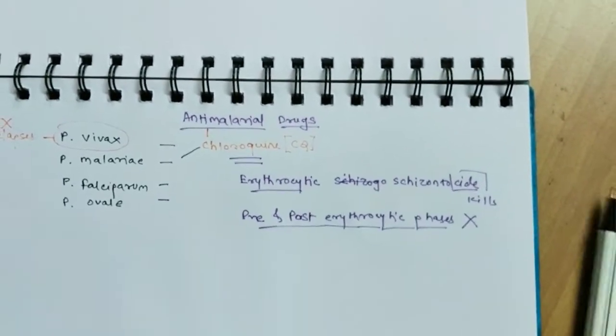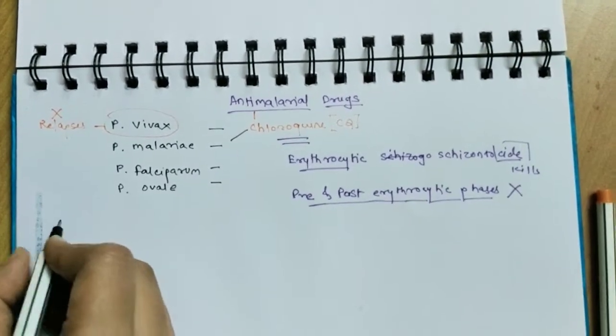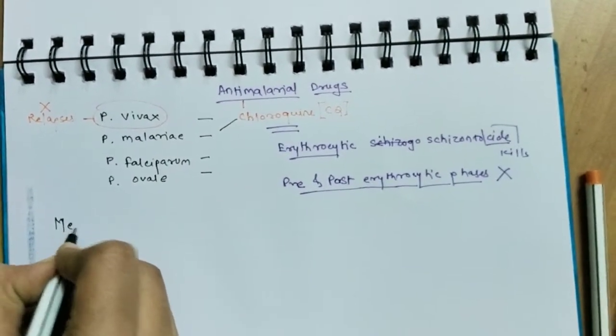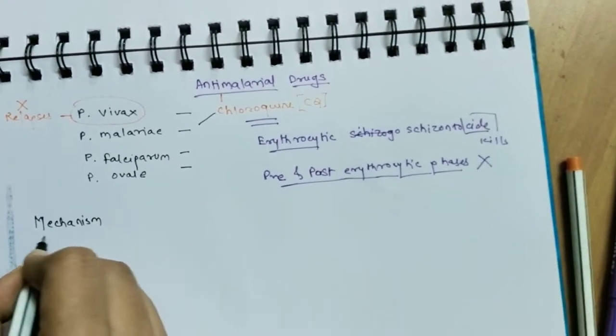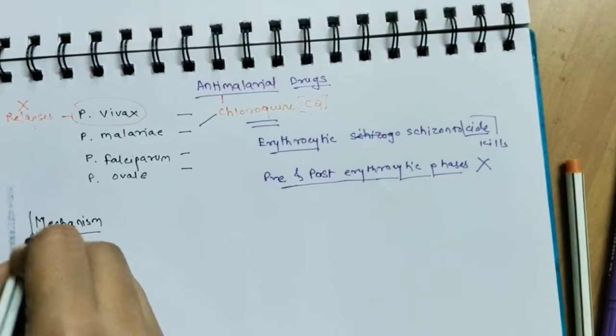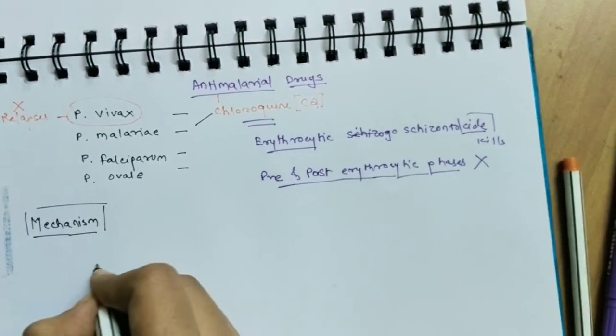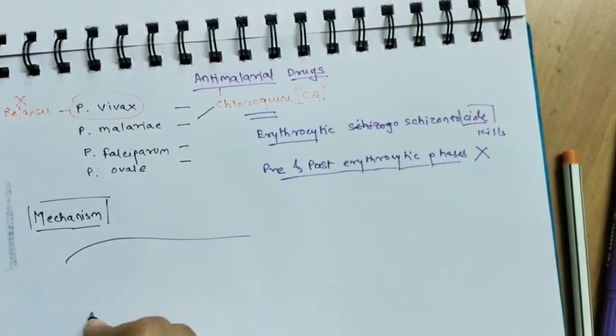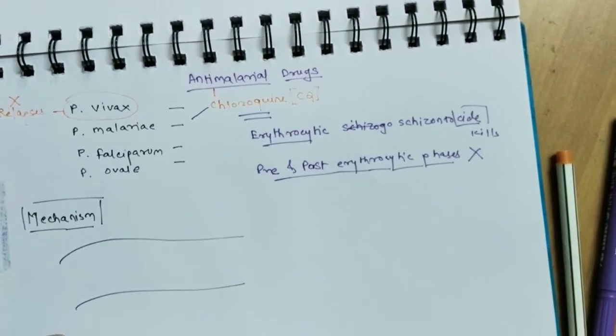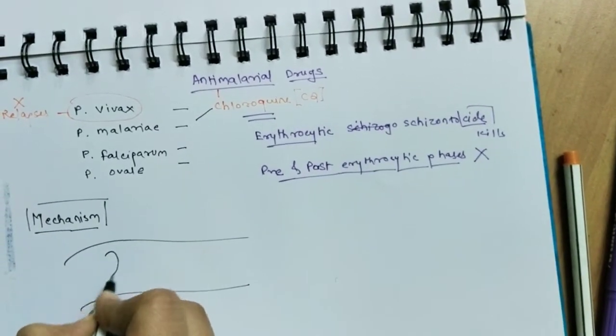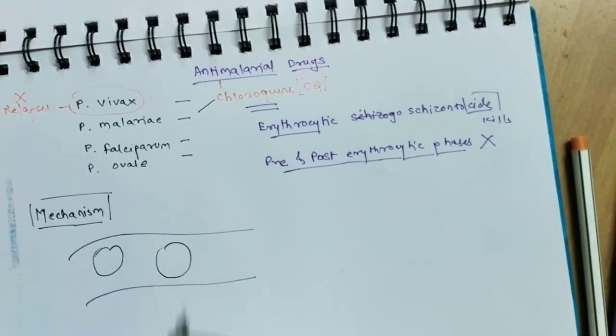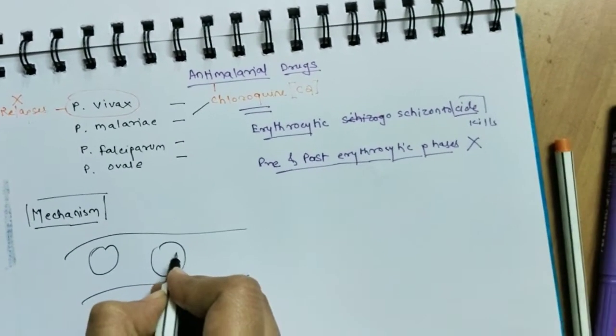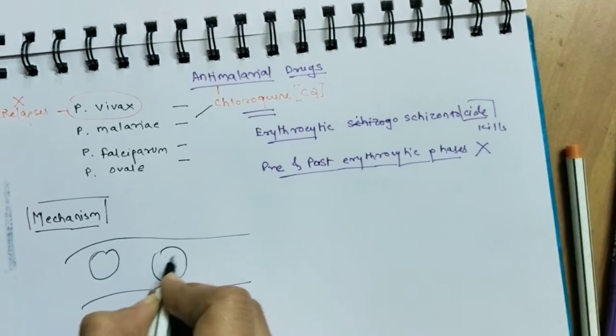So let's come to the mechanism of chloroquine, how it works in our body. Mechanism of action of chloroquine. So first of all, we have to understand what the plasmodium does and how it works in our body. So let's assume this is a vessel, an artery or vein, and it's an RBC, an erythrocyte.